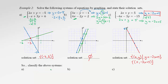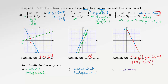Finally, let's classify the above systems. In the first system, we have a solution, so it's consistent, and the lines are different, so it's independent. In the second example, two parallel lines give no solution — no solution means the system is inconsistent, and since the lines are still different, the system is independent. In the third example, lots of solutions means it's consistent, but the two lines are exactly the same, so they depend on each other — the system is dependent.